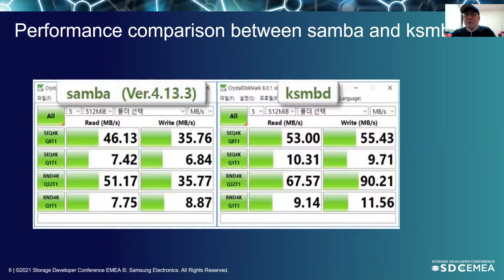The result of the previous page showed testing between a Linux client and Linux server. This is the result of performance measurement through a Windows client using the CrystalDiskMark benchmark tool. This result also shows a performance difference of almost 10% to 20% compared to Samba.